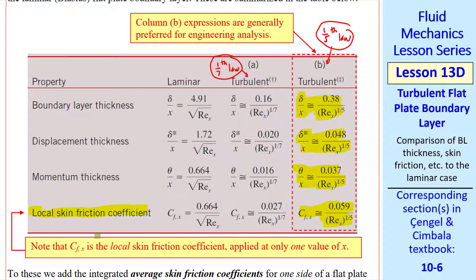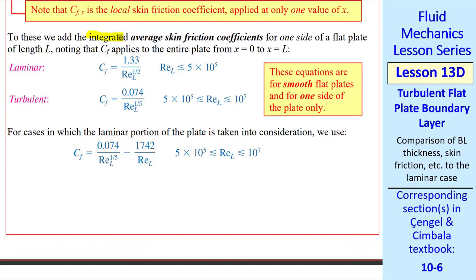I note here that Cfx is a local skin friction coefficient at some x value. If we're interested in the entire skin friction force on the plate, we have to integrate Cfx from x equals 0 to x equals L, the end of the plate. We did the same thing for laminar flow and got this result. And this is the equation we get for the turbulent boundary layer using the 1/5th law of column B. We see that we use our critical Reynolds number to decide whether the flow is laminar or turbulent, as I stated earlier. There's actually an upper limit of 10 to the 7th where this equation is no longer reliable.